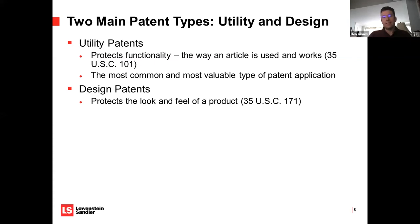There are two main types of patents in the US: a utility patent and a design patent. A utility patent protects the functionality of something — what that thing is actually doing. A design patent, on the other hand, protects the look and feel of something. For example, you could get a design patent on a certain ornamental design for a chair. You didn't invent the chair itself — it has the same functionality as other chairs — but it looks a certain way.